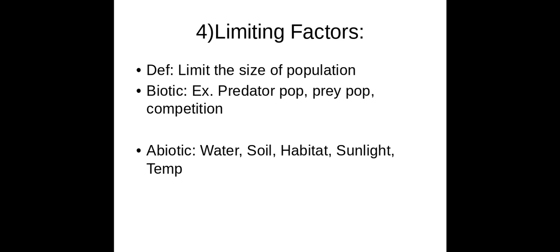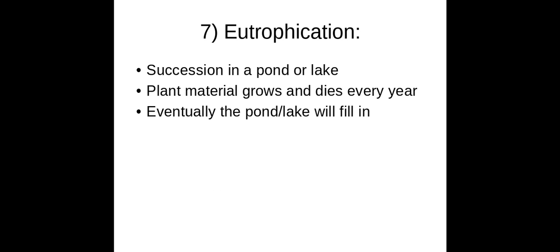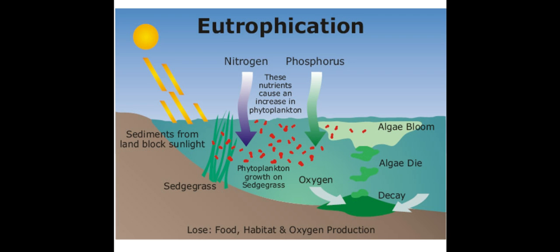Limiting factors are anything that limits the size of a population in an ecosystem or biome. You can have biotic limiting factors, such as deer being limited by the number of predators, but it ultimately boils down to abiotic limiting factors: how much water, soil habitat, sunlight, minerals, and workable temperatures are available — that determines how much life can exist. We've also talked about carrying capacity, succession, and eutrophication, which is basically succession in a pond or lake.